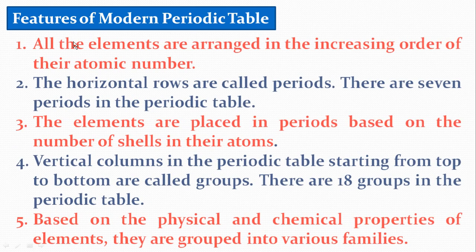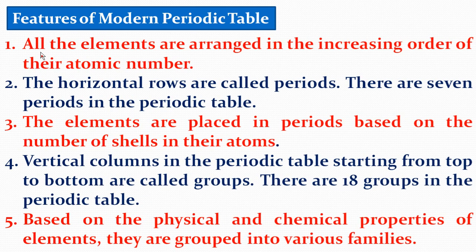What are the features of the Modern Periodic Table? In the Modern Periodic Table, all elements are arranged in the increasing order of their atomic number Z. The horizontal rows are called periods. There are 7 periods in the periodic table. Elements are placed in periods based on the number of shells — K, L, M, N — in their atoms.